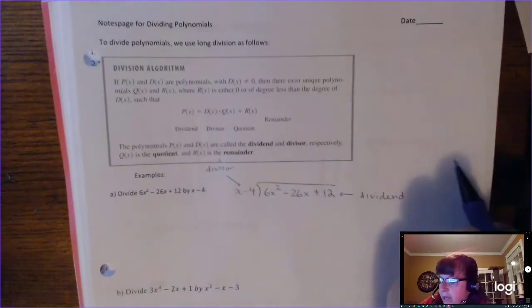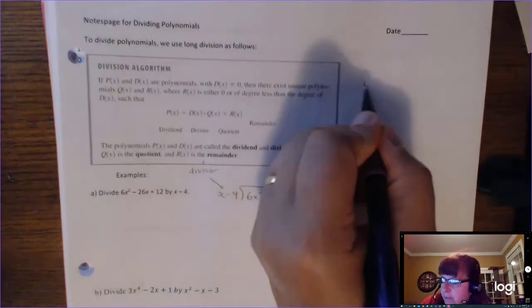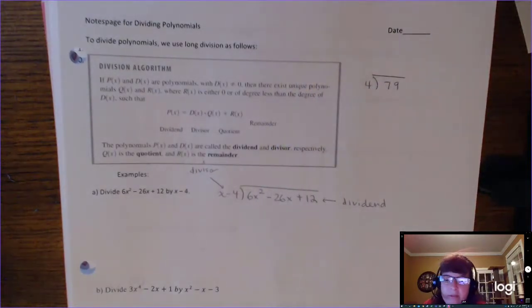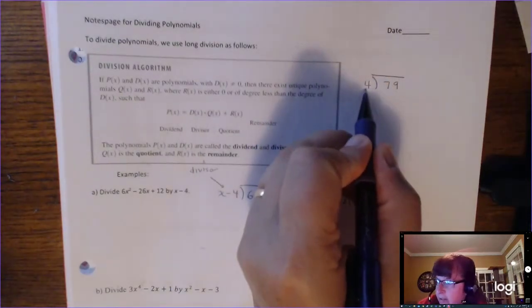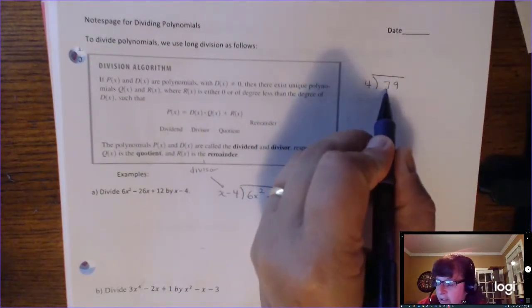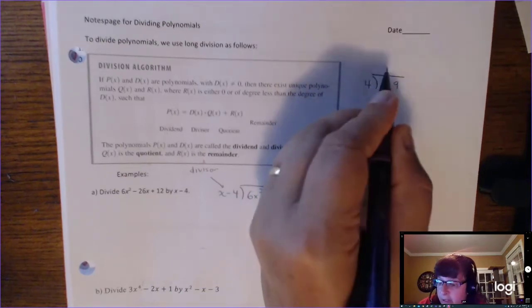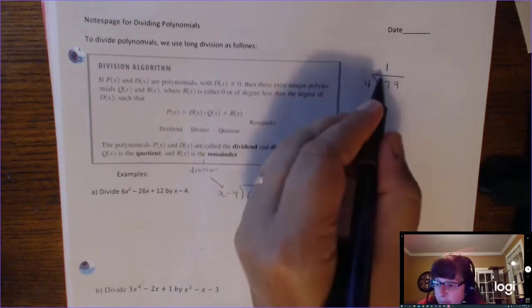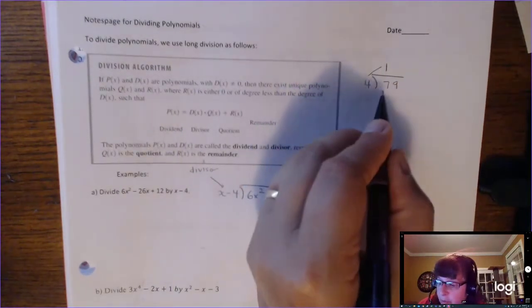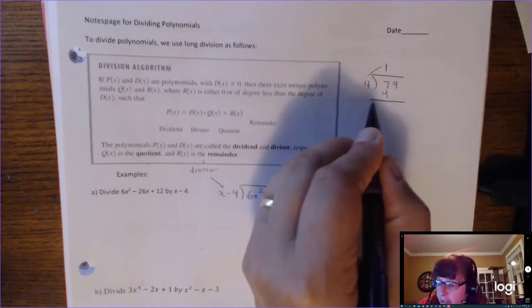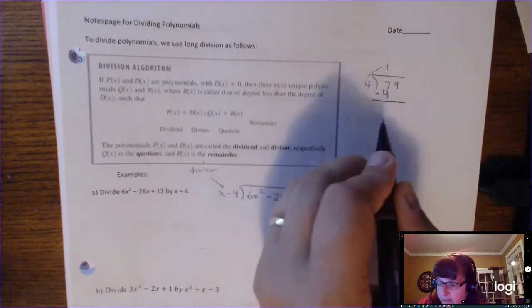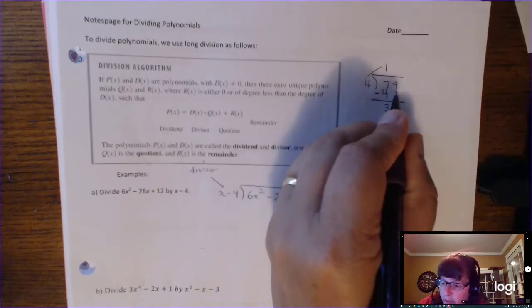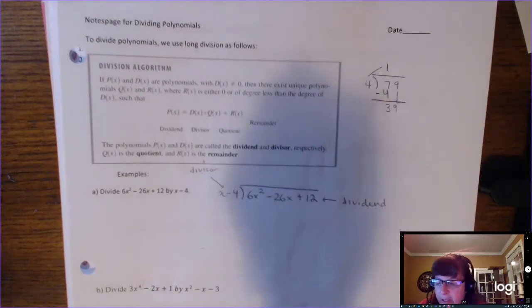Before we divide, let me remind you how we divide normally with numbers. You take the divisor 4 and divide it into just this first number, 7. 4 goes into 7 one time and you write it up there. Then you multiply: 1 times 4 is 4. Draw your line and subtract. 7 minus 4 is 3, then you bring that 9 down and do it again.